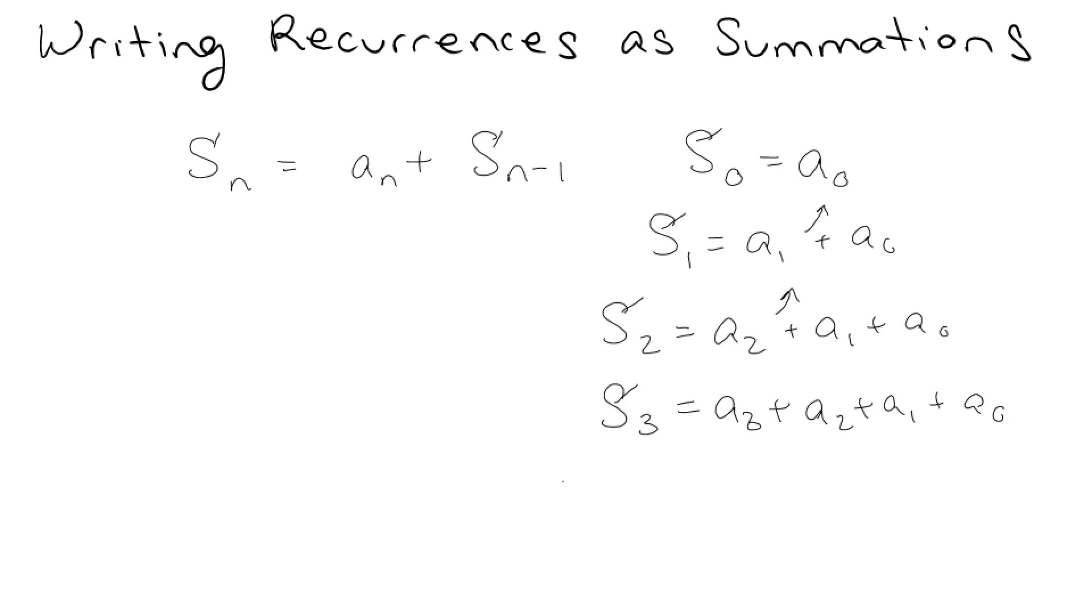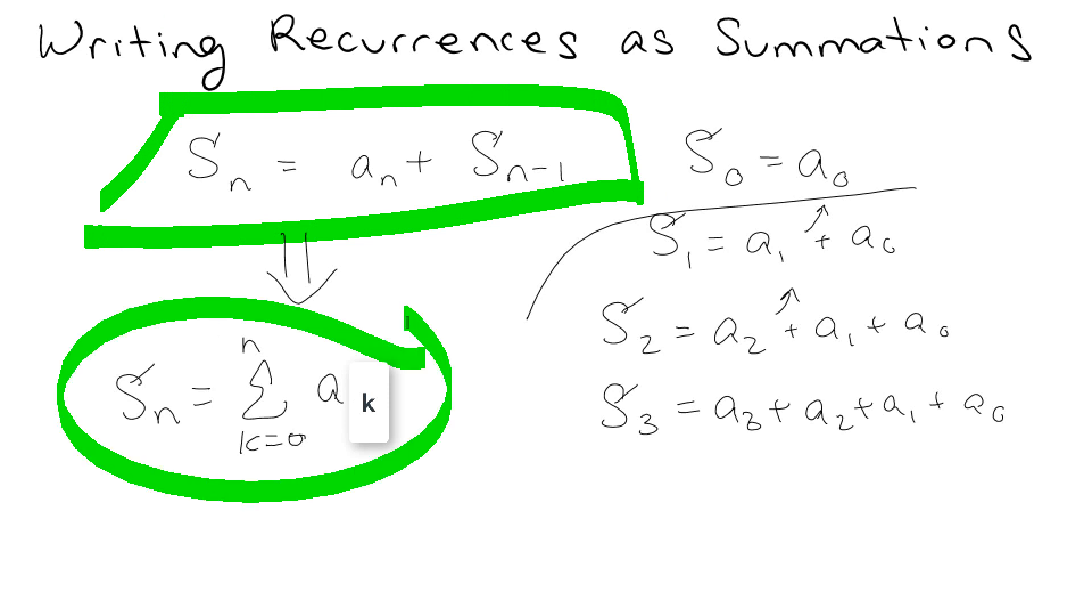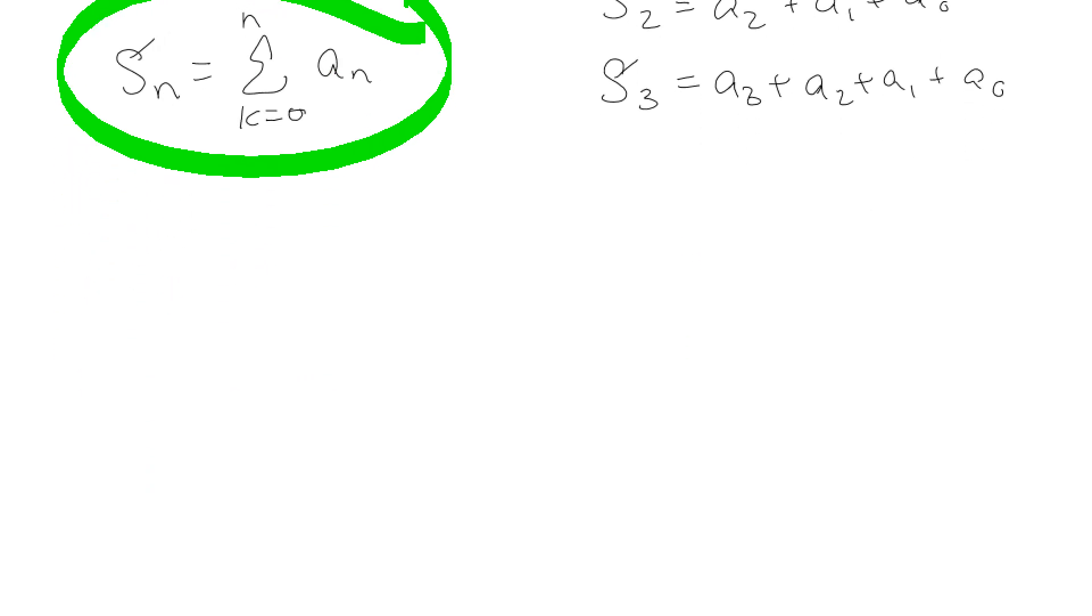So basically what we have here is we have a summation. So we can rewrite this recurrence as saying S_n is equal to the sum of k going from 0 to n of a_k. Basically what I can do now is if I have a decent recurrence that's written just right, if I'm lucky, I can rewrite that as a summation, which is pretty cool.